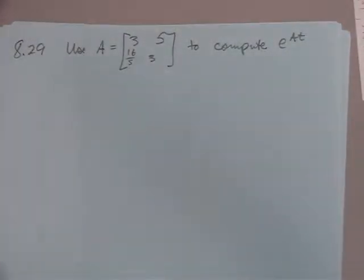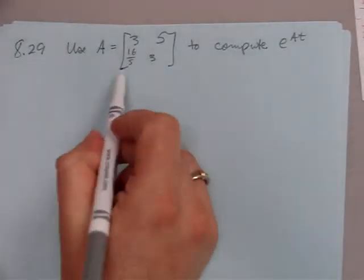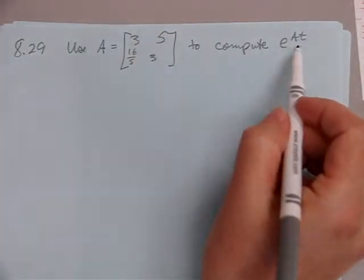Okay, let's look at some hints for textbook problem 8.29. It says, use this matrix A, 2 by 2, to compute e to the At.